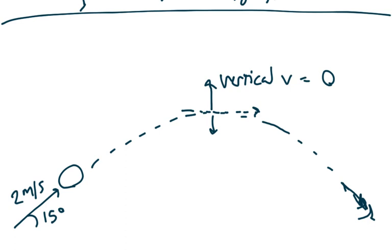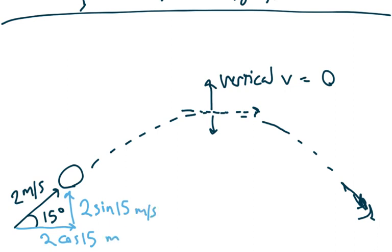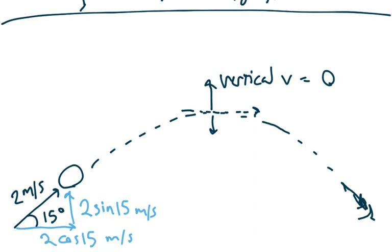We can use the same principles we used with the bullets. We've got a velocity at an angle, but we can split it into components using SOHCAHTOA. We can say the vertical component is 2 sine 15 and the horizontal component is 2 cosine 15, both in meters per second. The horizontal velocity of 2 cosine 15 stays the same when it lands, but the vertical velocity changes — when it lands it will be negative 2 sine 15 meters per second.